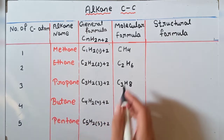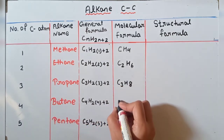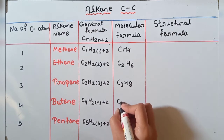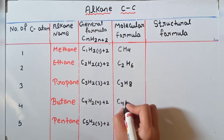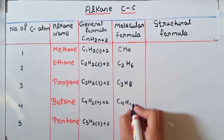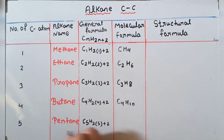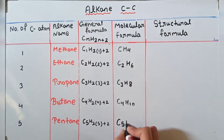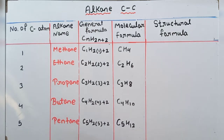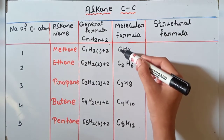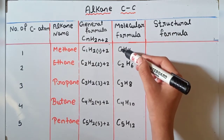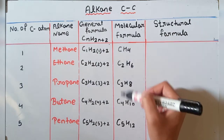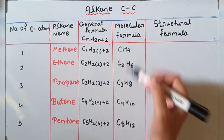Butane ka molecular formula kya ban jayega — C4H10. For pentane, molecular formula will be C5H12. Yahan par dekhiye, number of carbon ki series hai 1, 2, 3, 4, 5.